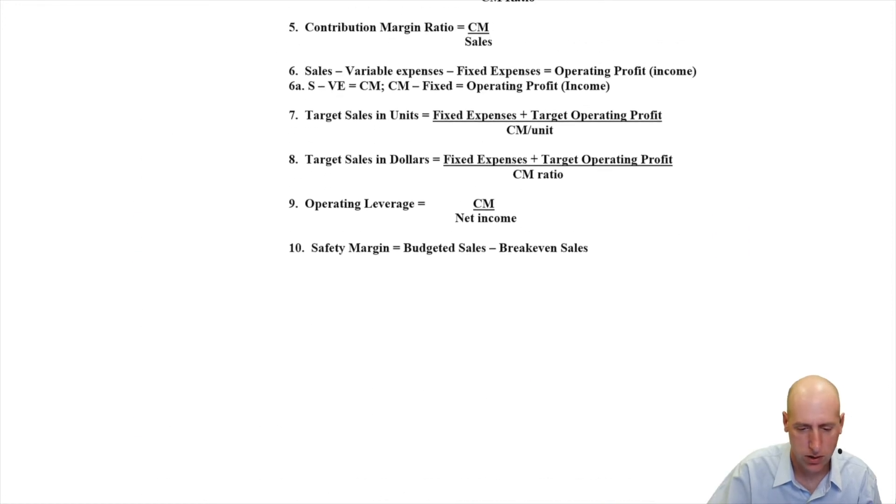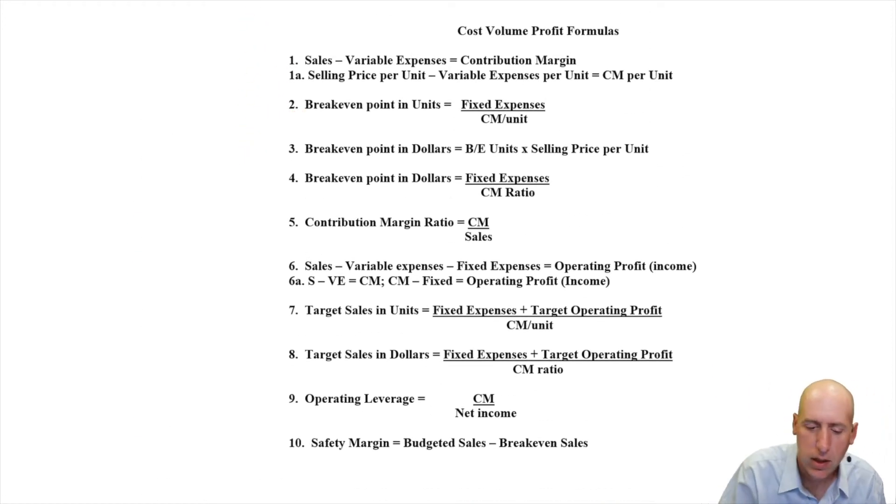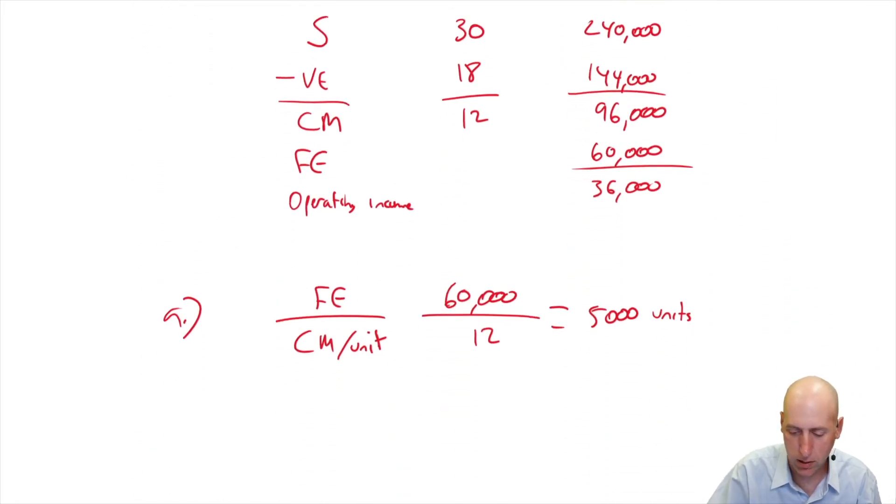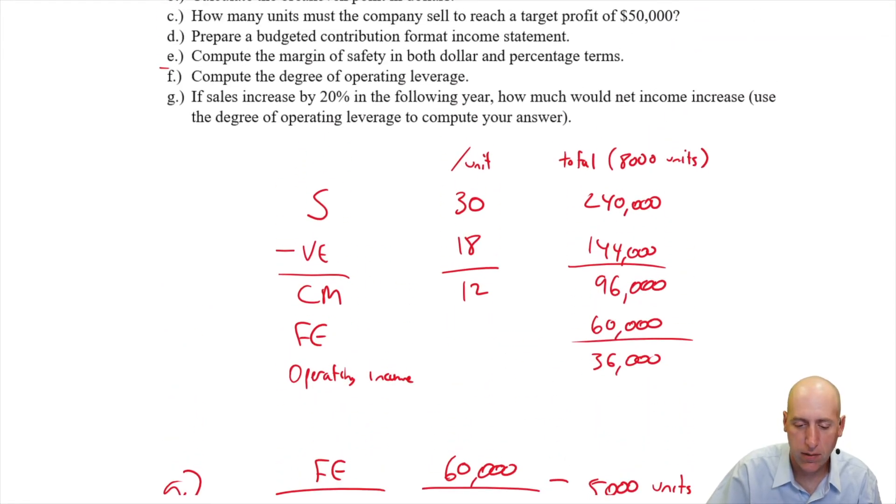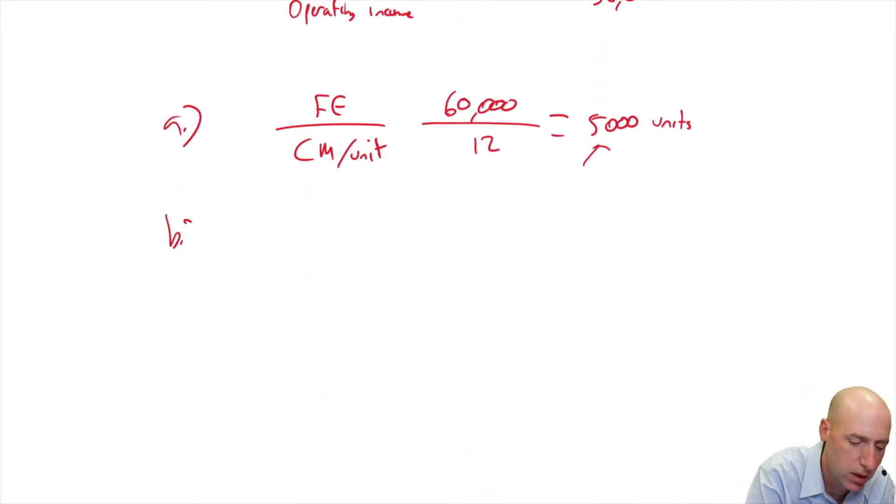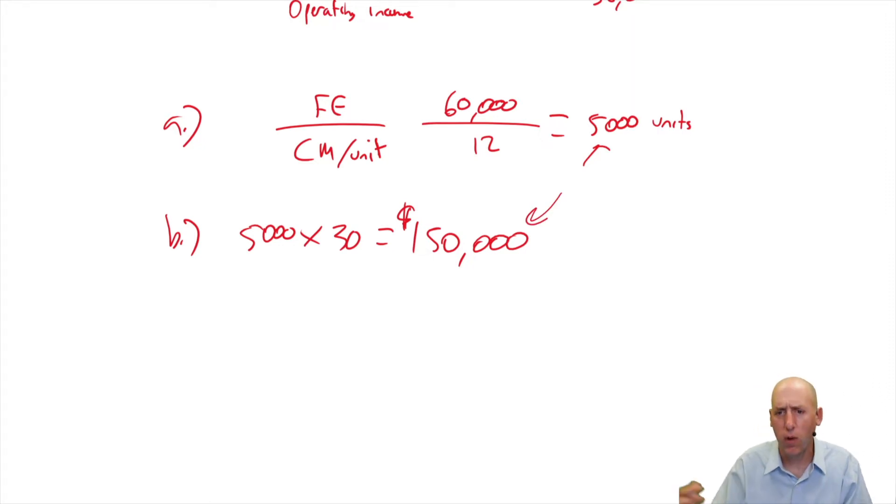Part A said calculate break-even units. Part B, calculate break-even dollars. Well, the easiest way is to use formula three. Break-even point in dollars: break-even units times selling price. Okay, so I know I need to sell 5,000 units. And when I sell 5,000 units, I sell them for $30 a unit. So 5,000 times $30 means if I want to break even, I need to sell $150,000 worth of bow ties. Again, both of these numbers are really useful to know. Okay, well, once I'm selling more than $150,000 in bow ties, I'm starting to make money. Or once I sell my 5,000th bow tie, I'm starting to make money.